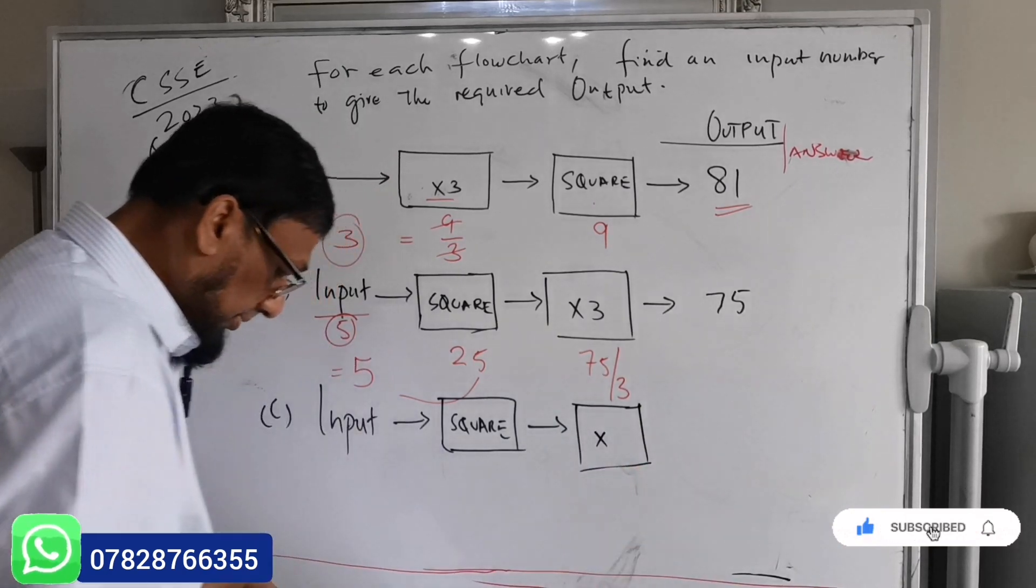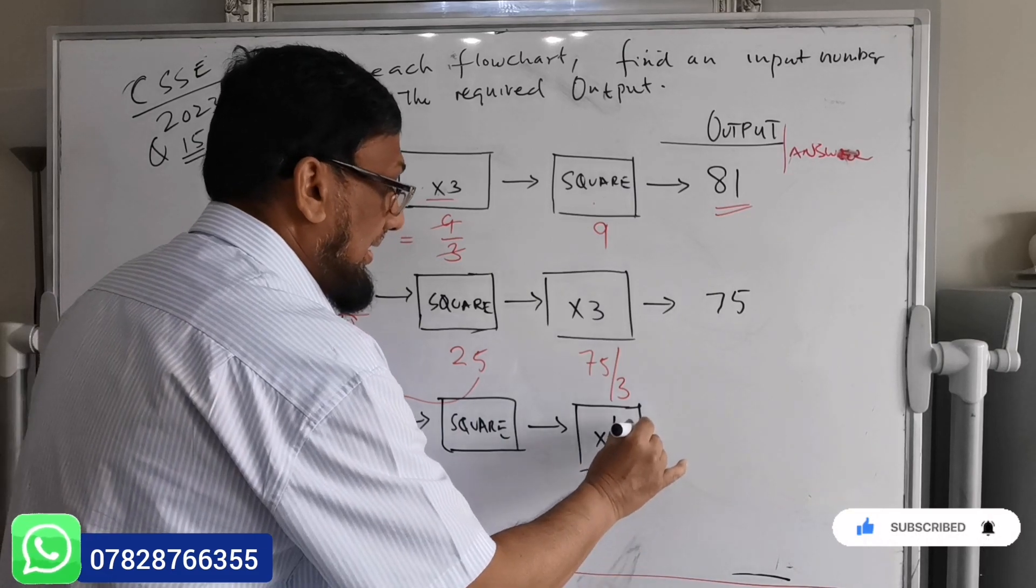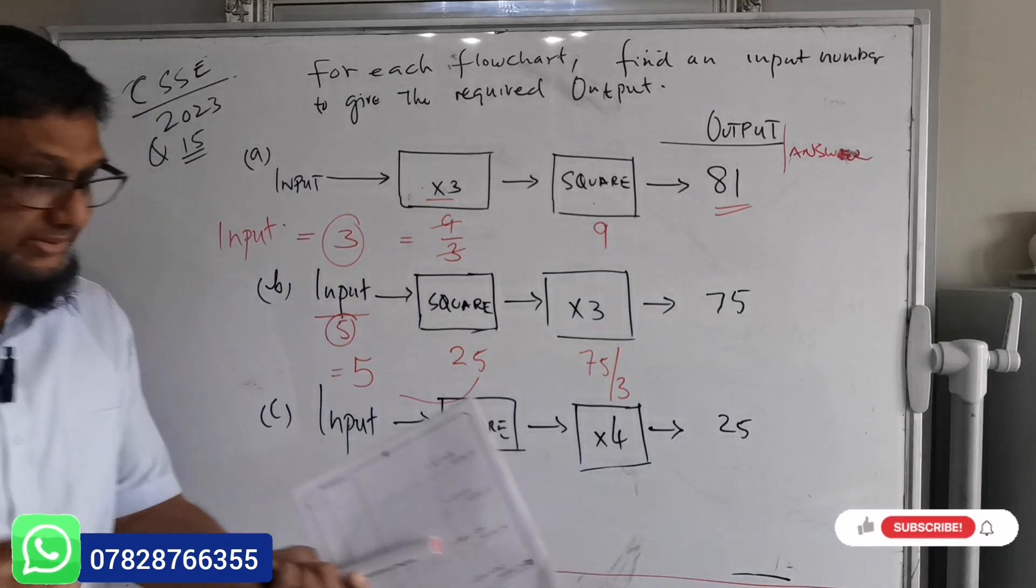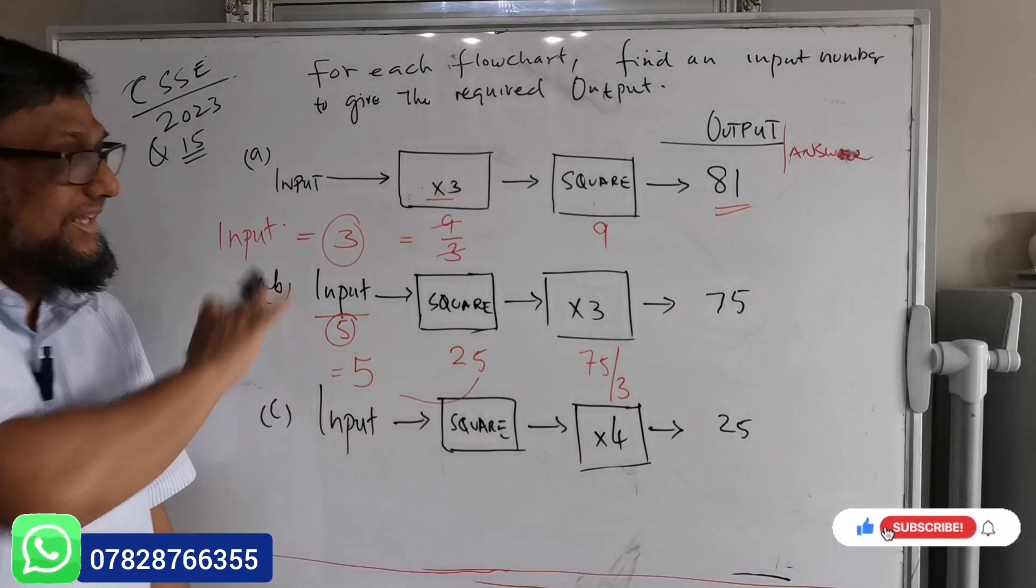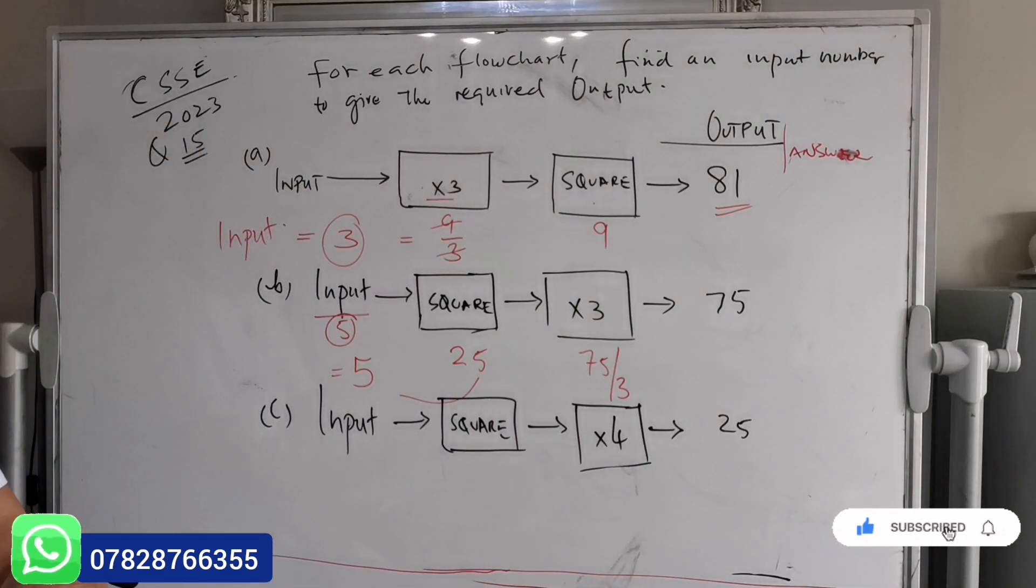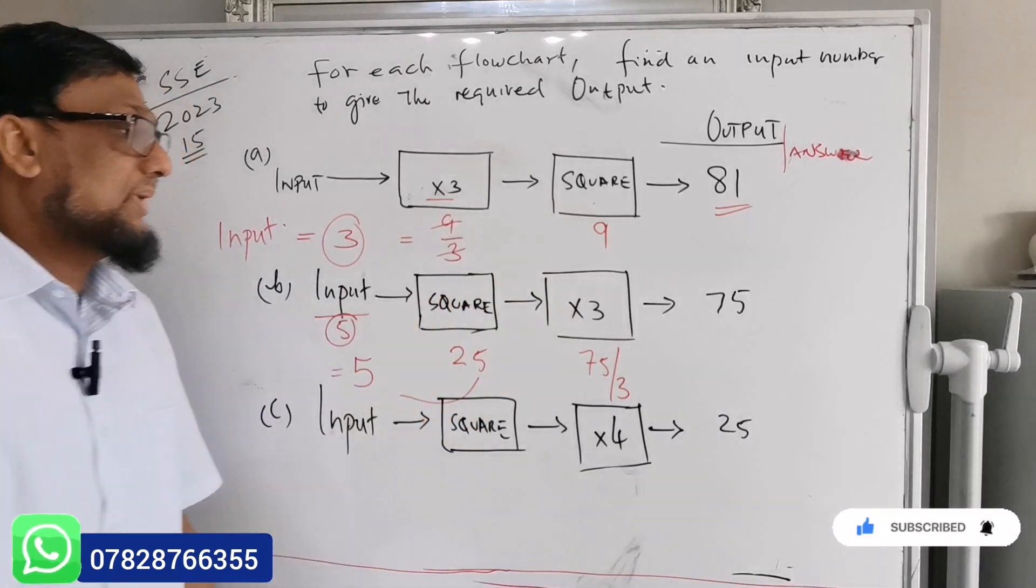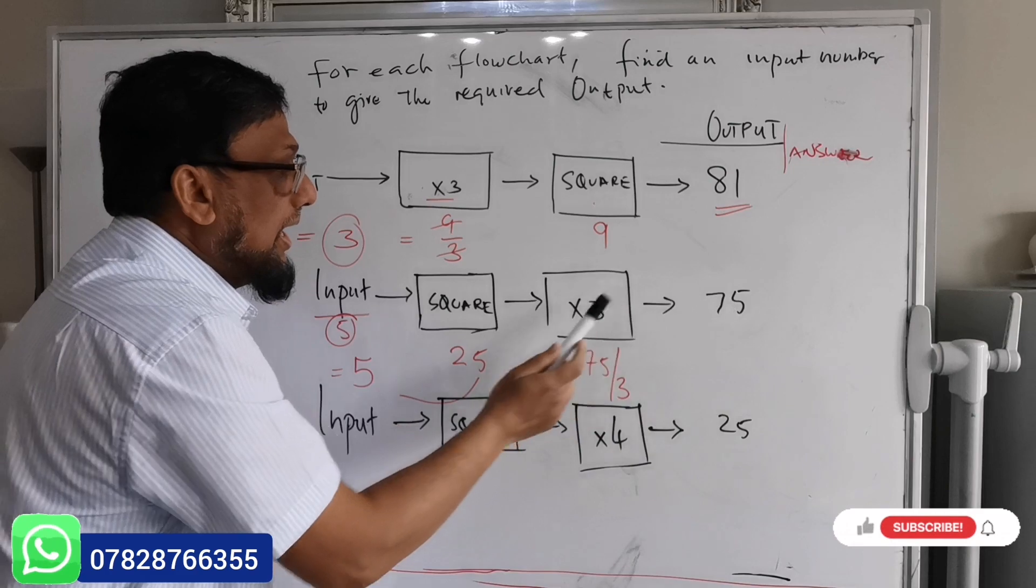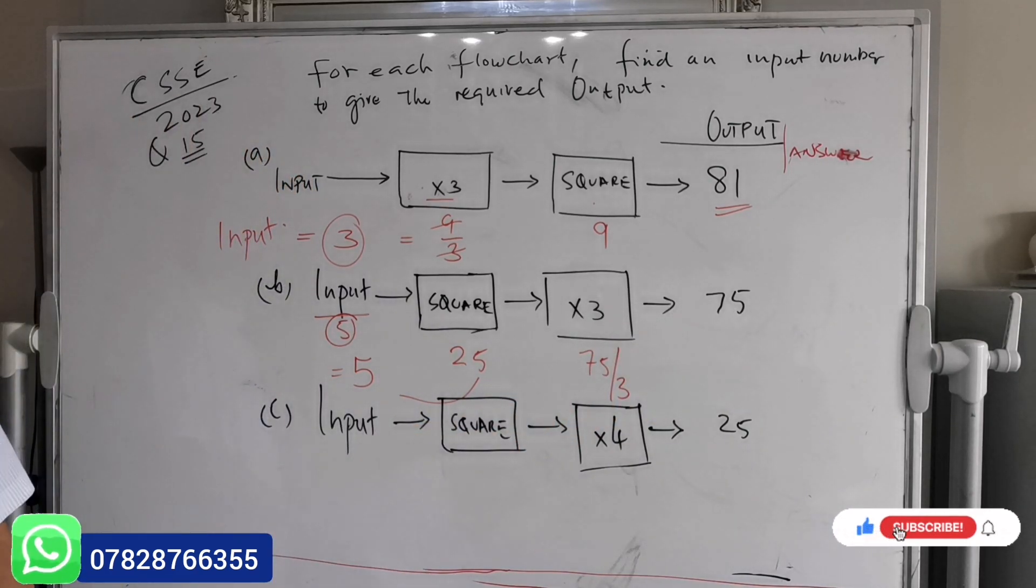And arrow, then says times by 4, and then the output will be 25. Exactly, don't be confused with the numbers. You need to follow the same method you did for part A and part B.